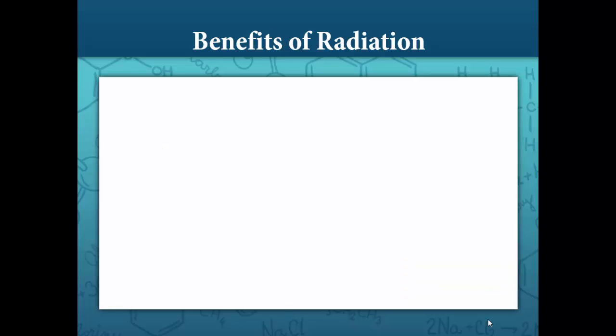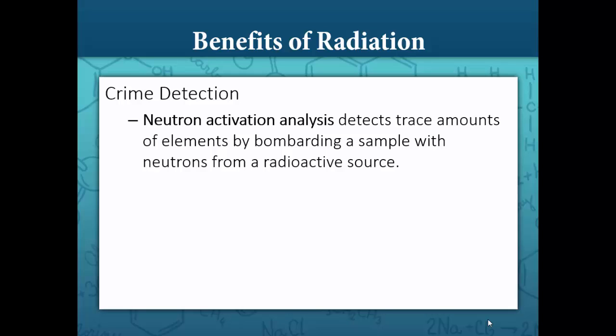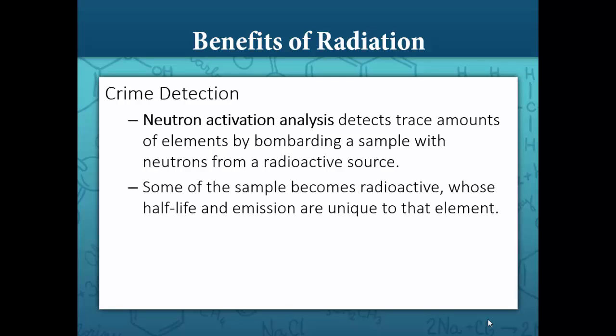So why do we use radiation in the first place? Because of its many benefits. Radiation is used in crime detection. Neutron activation analysis detects trace amounts of elements by bombarding the sample with neutrons from a radioactive source. Some of the sample becomes radioactive, whose half-life and emission are unique to that element. This is how forensic scientists identify trace elements at a crime scene.